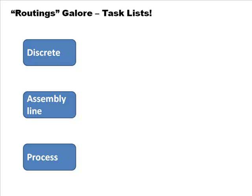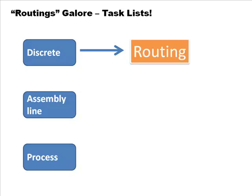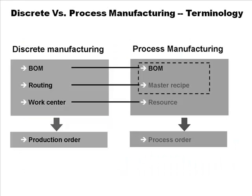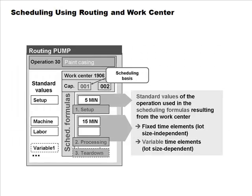Revisiting the task list concept: 'task list' is the superordinate term. In discrete manufacturing it's called a routing; in assembly line manufacturing it's called a rate routing; in process manufacturing it's called a master recipe. Similarly, in discrete manufacturing the terms are BOM, routing, work center, and production order, whereas in process manufacturing the terms are BOM, master recipe, resource (instead of work center), and process order.